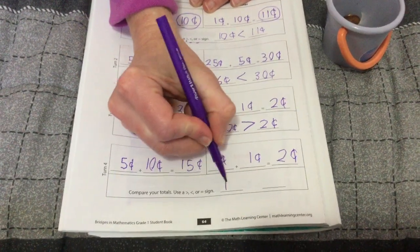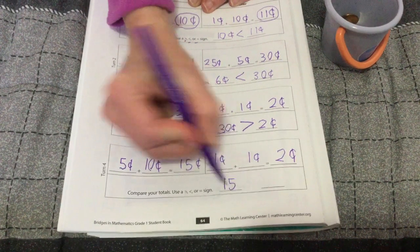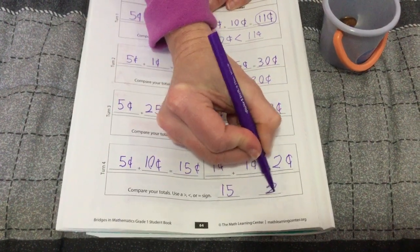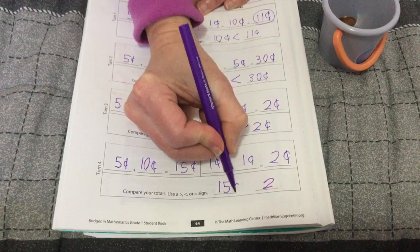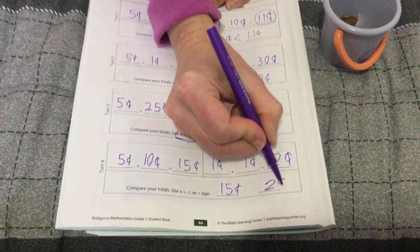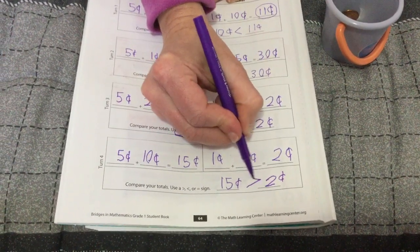All right. Did you come up with fifteen? Here. Two here. My cents symbols so we know we're talking about money. And then fifteen is definitely greater than two.